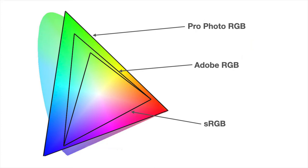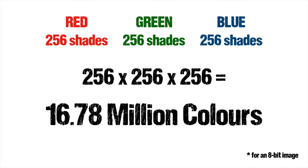Adobe RGB is a little bit bigger and ProPhoto RGB is bigger yet again. But this is often misunderstood — they all actually have the same number of colours, which is over 16 million, but the colours are more spread out in the larger colour spaces. The key thing to remember is that the colours might not actually be identical in different colour spaces.